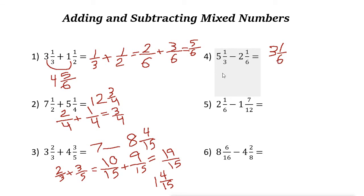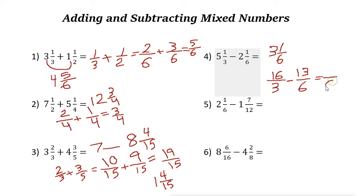You can also use another method: convert both mixed numbers into improper fractions. To convert, multiply the whole number by the denominator and add the numerator. Five and one-third becomes sixteen over three (five times three is fifteen, plus one is sixteen). Two and one-sixth becomes thirteen over six (two times six is twelve, plus one is thirteen). Now find a common denominator — it is six, so sixteen over three becomes thirty-two over six.